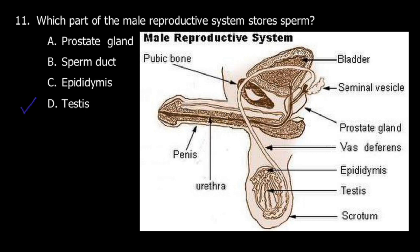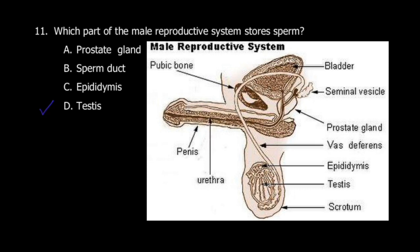This one connects the testis to the vas deferens. There's the sperm duct, so it's connected through this. This one is the one that channels between the testis and the sperm duct here. The prostate gland produces the fluid. Sperm actually comprises fluids as well, and those fluids are produced by the prostate gland.